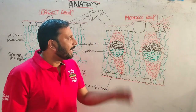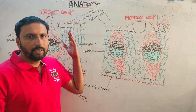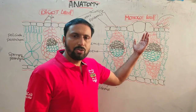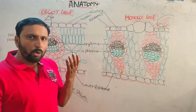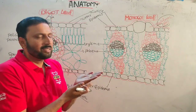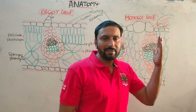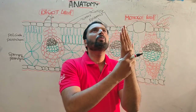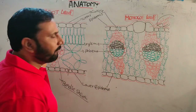Now the comparison between dicot leaf and monocot leaf. Dicot leaf is a dorsiventrally differentiated leaf, for example mango, where the upper surface is much greener than the lower surface. Monocot leaf is isobilateral, for example grasses, where the leaf is uniformly exposed to sunlight.